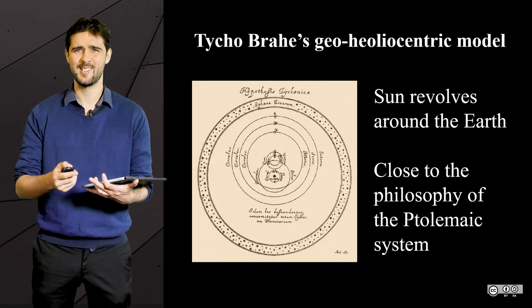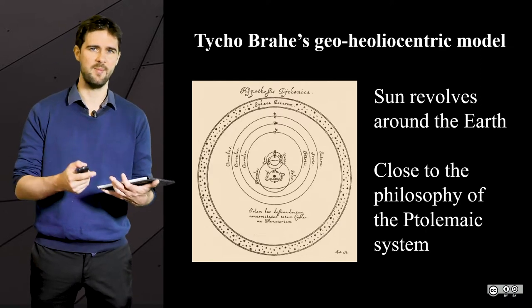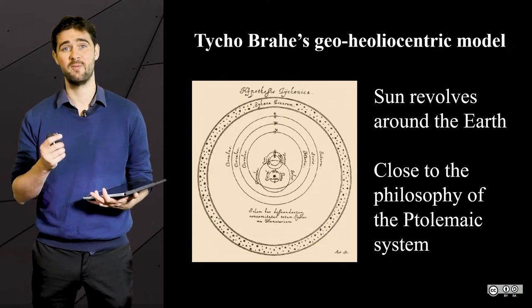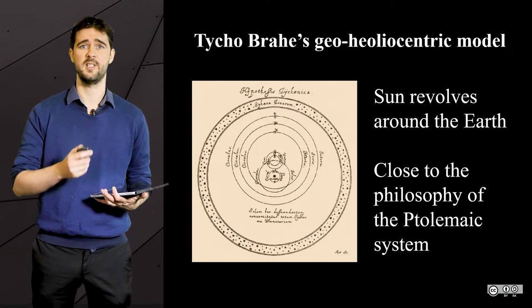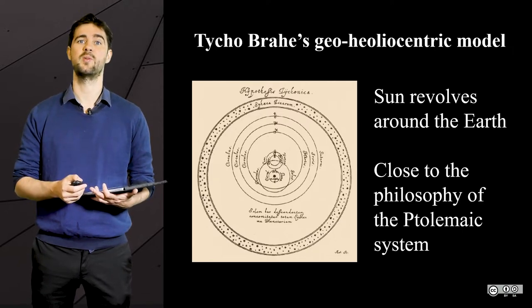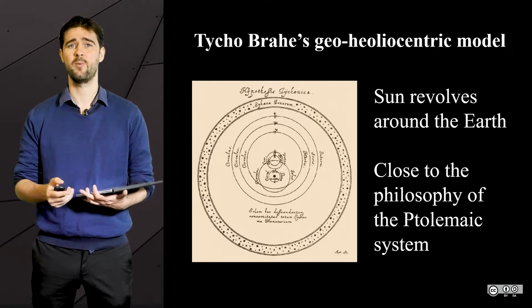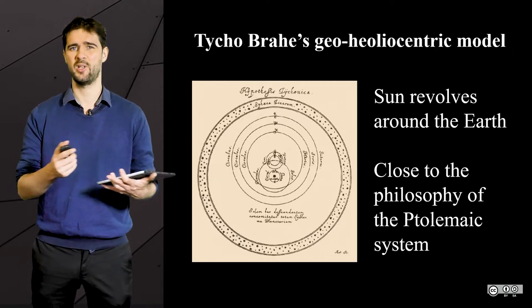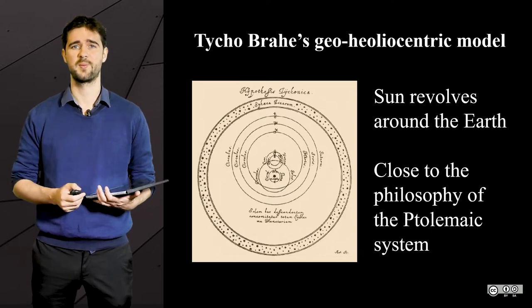The necessity to abide by the morals of the time greatly influenced his interpretation of the data. And guess who is the most famous one now — Brahe with his geo-heliocentric system, or Copernicus?